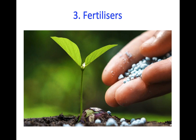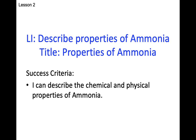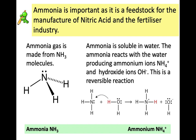Our lesson is going to be split in two today. In the first half we are going to be looking in a bit more detail at ammonia itself, and then we are going to be looking at a second process — the Ostwald process — which takes ammonia and produces nitric acid. It is this nitric acid which is used to make nitrogen-containing fertilisers. In the first half of our lesson we are going to be describing the properties of ammonia, and hopefully at the end you'll be able to describe some chemical and physical properties of ammonia.